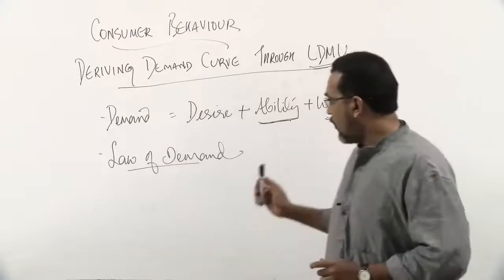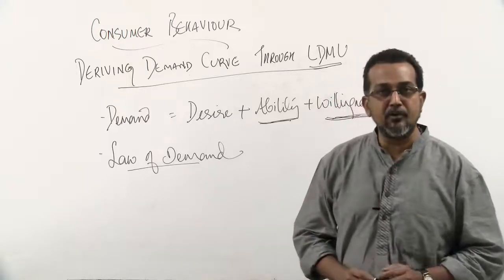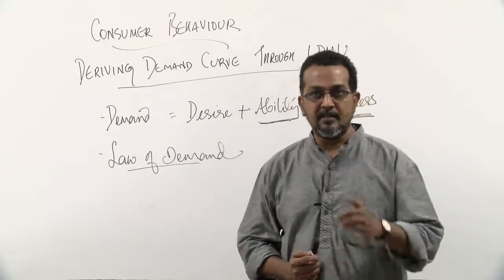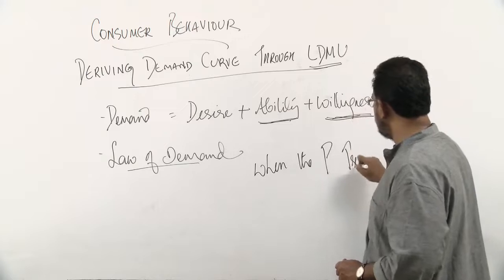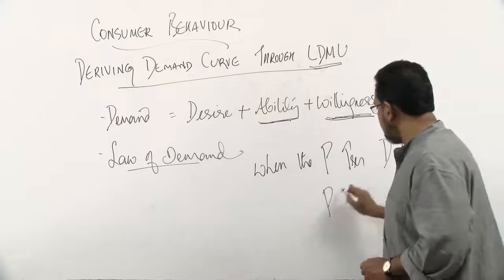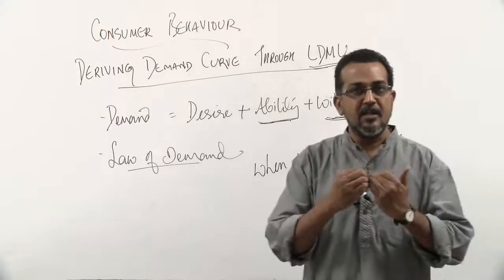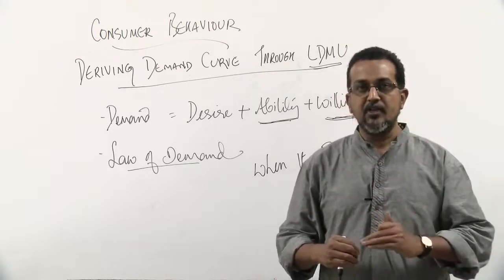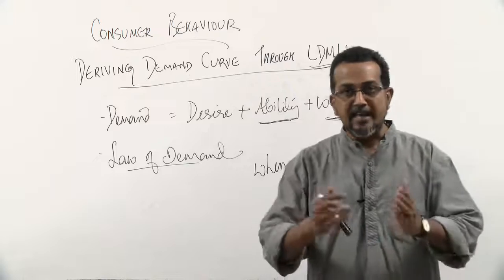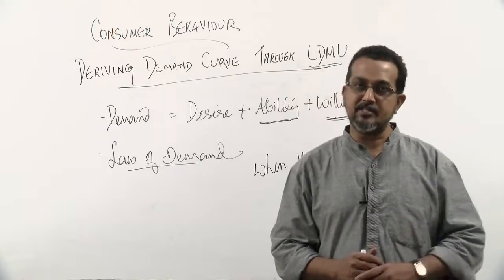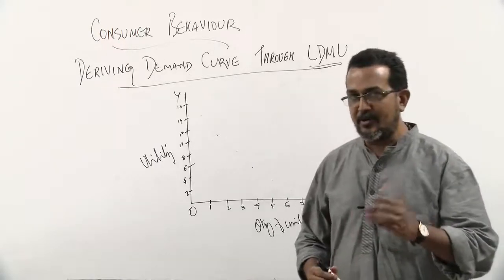Numerous factors influence the demand for a commodity, but price is very important. The law of demand explains the relation between the price of a commodity and the demand for it. When the price increases, the demand decreases; when the price decreases, the demand increases. The law of demand states that there is an inverse or negative relation between price and demand for a commodity.